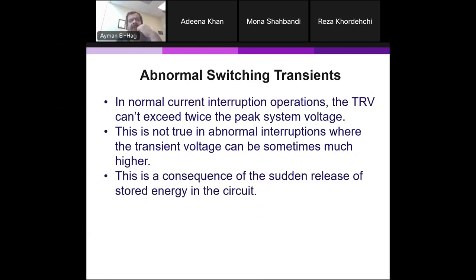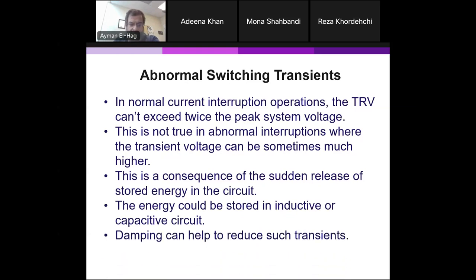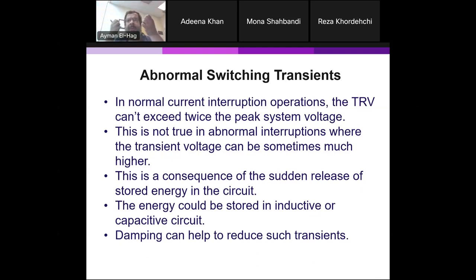Why do we have these abnormal interruptions and huge voltages? This is because there will be a sudden release of stored energy in the circuit — stored energy coming from an inductive or a capacitive part. We will consider the worst case scenario, which is when we don't have resistance in the system, because resistance is a damping factor that reduces transients. So every time we talk about transient overvoltages, we ignore the resistive part because it's easier to analyze and this represents the worst case.